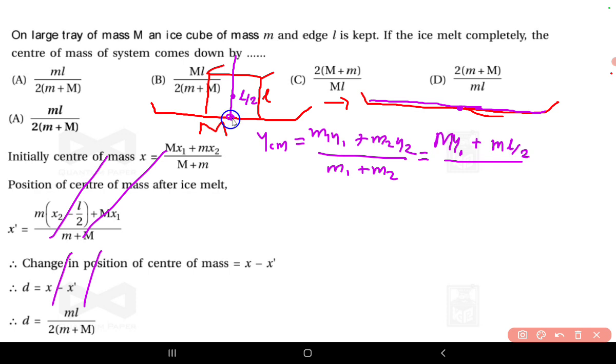And the total mass is M plus m. Now when ice melts, the new center of mass is y_cm dash.